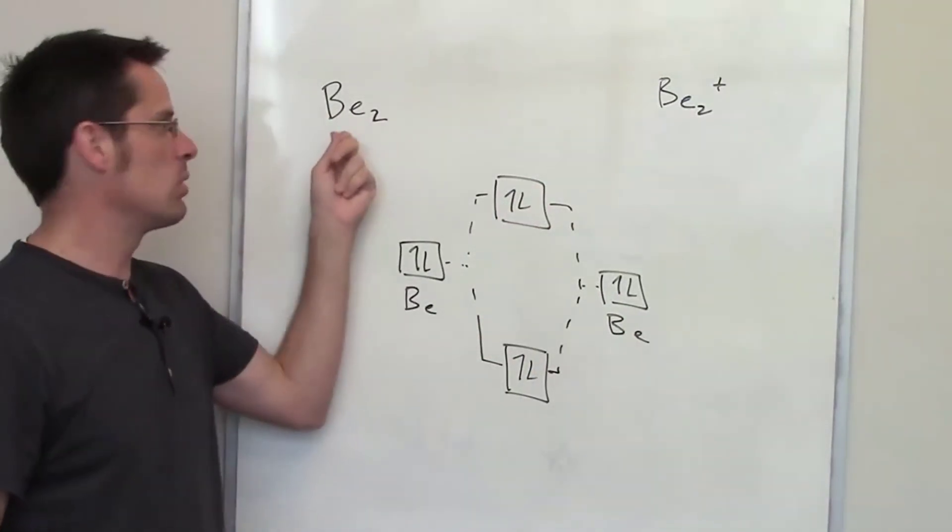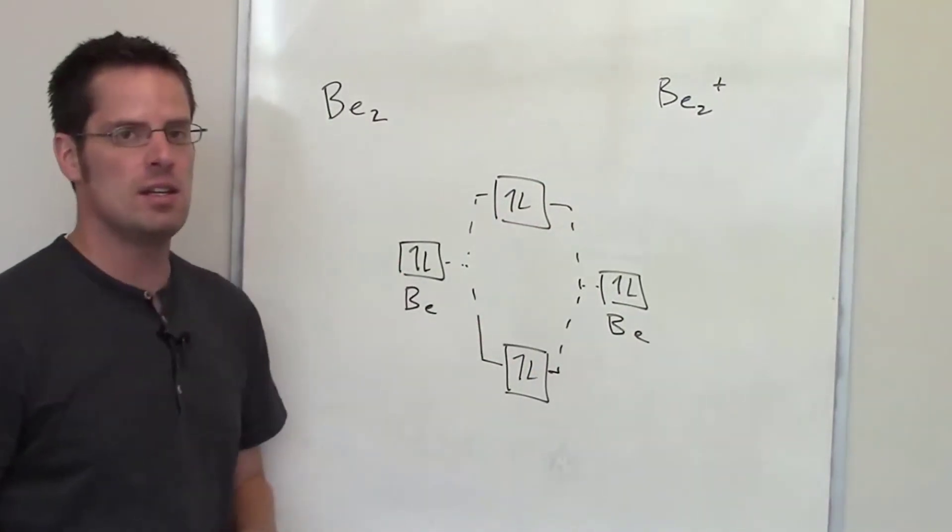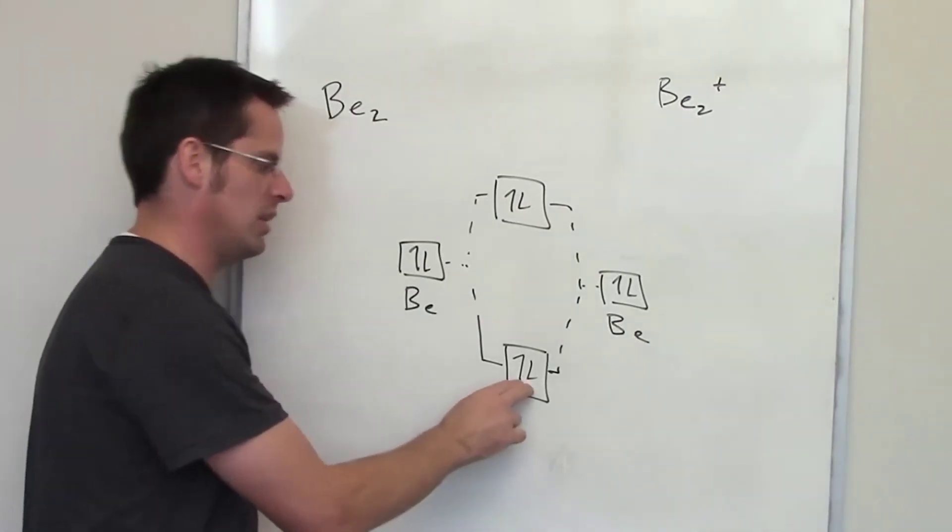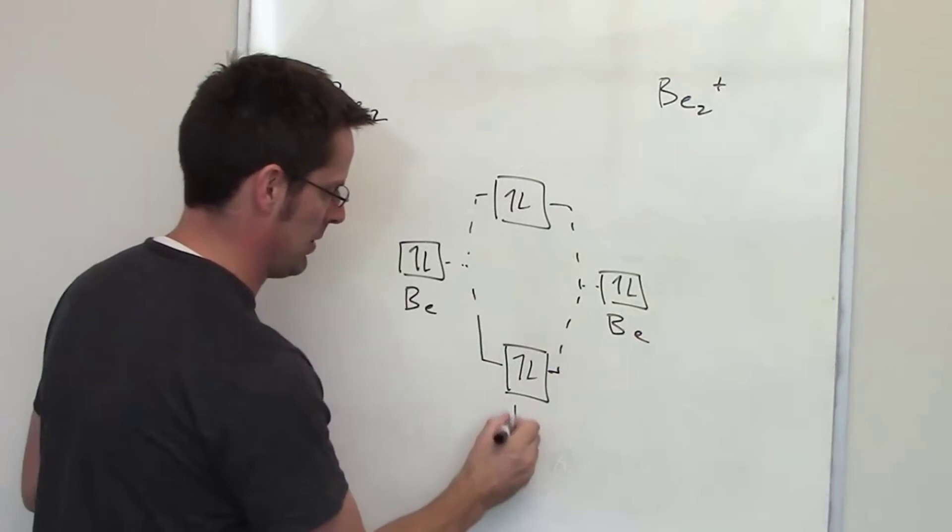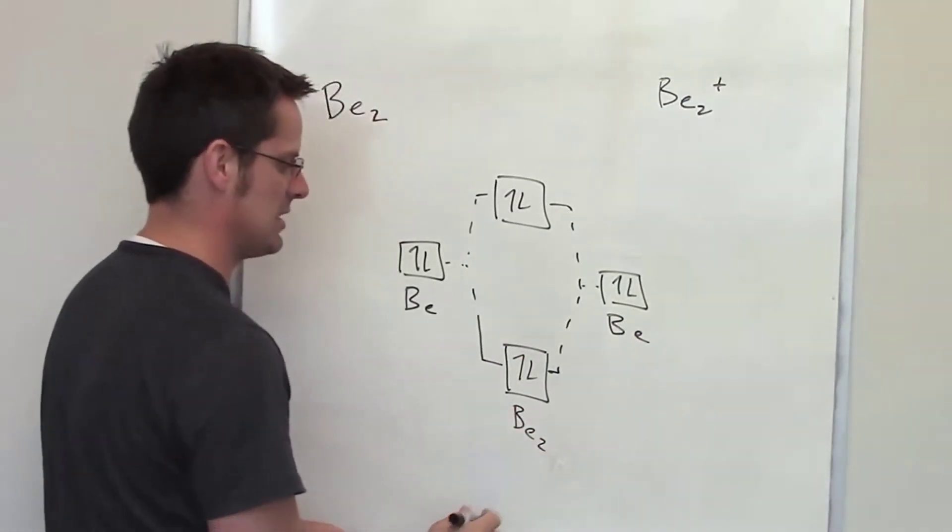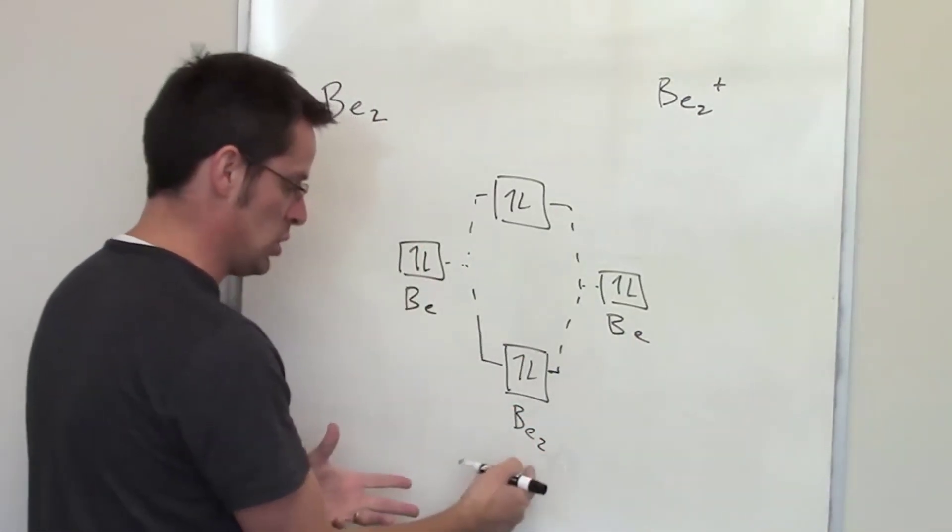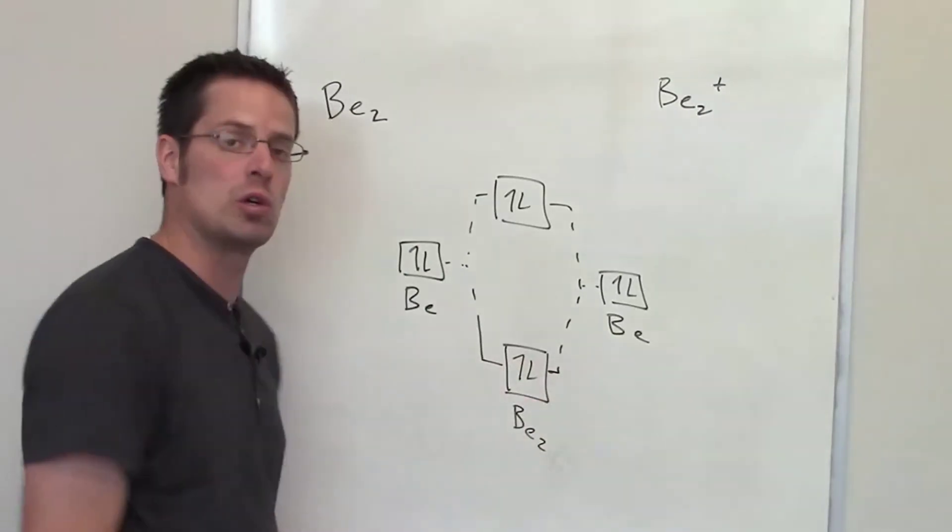Would we expect beryllium 2 to exist? The answer is no, because I've got the same number of electrons in the bonding orbital as I've got in the antibonding orbital. So beryllium 2 does not exist.